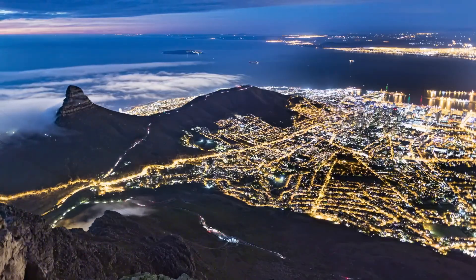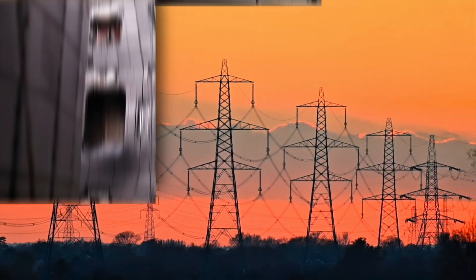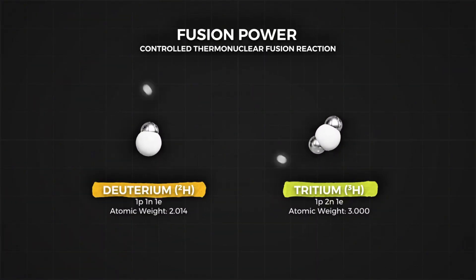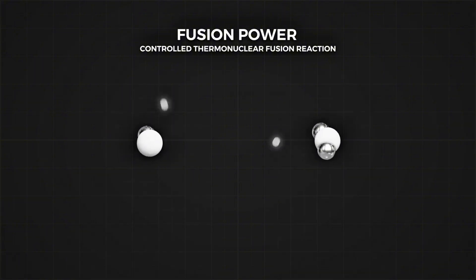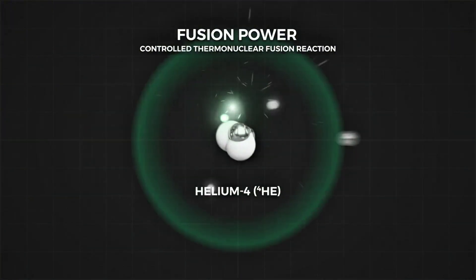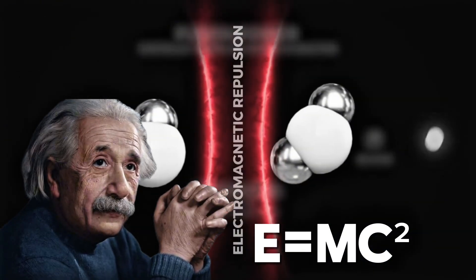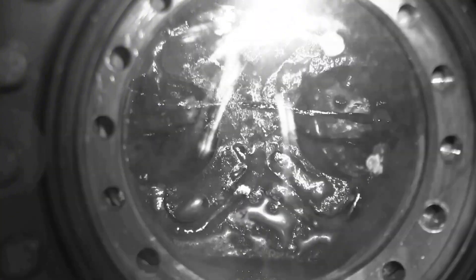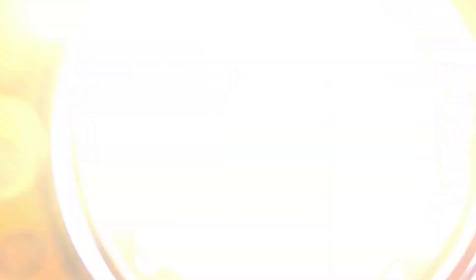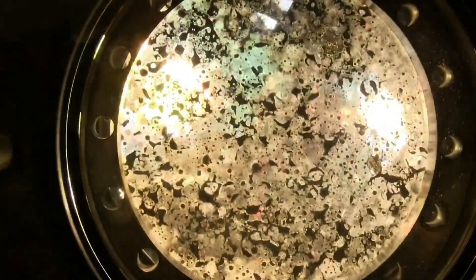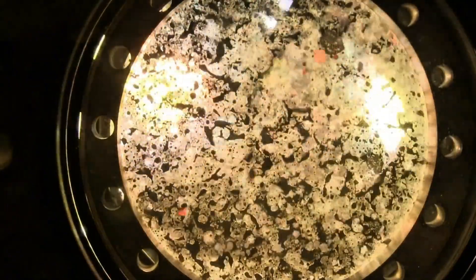Nuclear fusion is the process of combining light atomic nuclei to form heavier ones, releasing energy because some mass is converted into energy, as Einstein's famous E equals mc squared explains. The most practical fusion reaction on Earth is between two isotopes of hydrogen, deuterium and tritium, which fuse together to produce a helium nucleus, a neutron and a burst of energy.